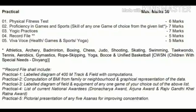The record file you will make should consist of the following: a labelled diagram of a 400-meter track and field; computation of BMI from family or neighborhood with graphical representation of data; a labelled diagram of field and equipment of any one game from the given list; list of current national awards — Dronacharya Award, Arjun Award and Rajiv Gandhi Khel Ratna Award; and a pictorial presentation of any five asanas for improving concentration.